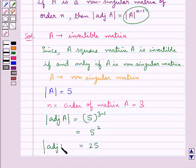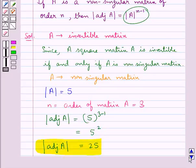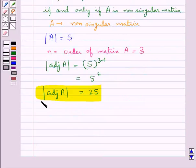Therefore, |adj A| = 25. This is our final answer. This completes the session. Hope you have understood the solution of this question.